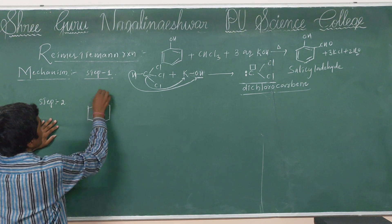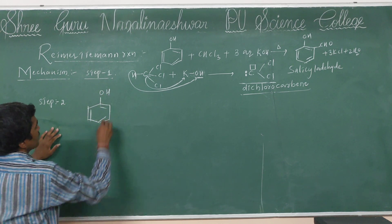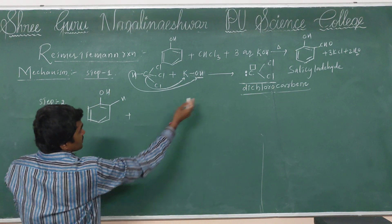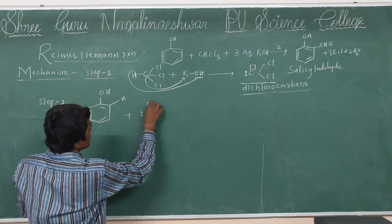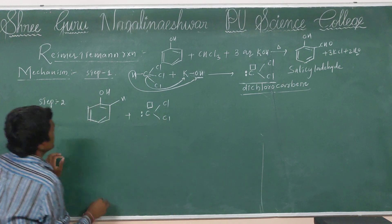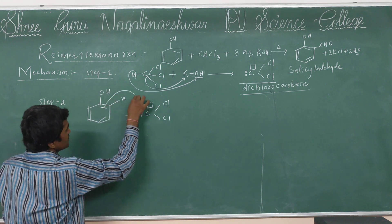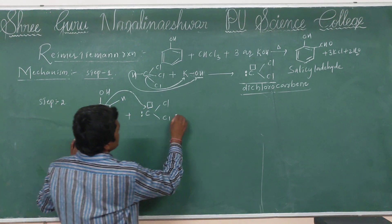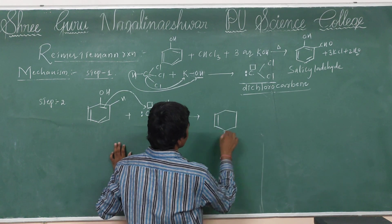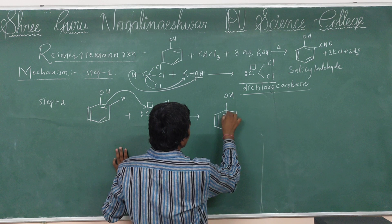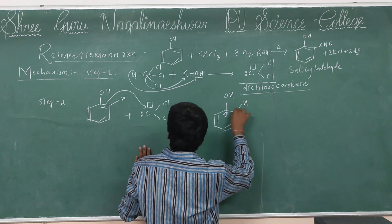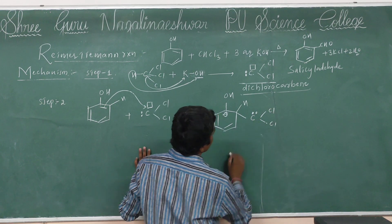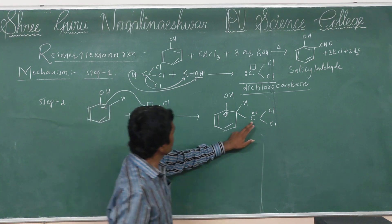Step two. In this reaction, we take phenol. Here, the electrophile dichlorocarbene — CCl2 — approaches the benzene ring. The pi bond of the benzene ring donates electrons to the vacant orbital of CCl2. Then an intermediate carbocation is formed.